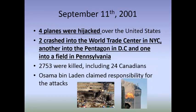The culmination of all this was the September 11th attacks. On September 11, 2001, four planes were hijacked over the United States. Two were crashed into the World Trade Center in New York City, another into the Pentagon in Washington D.C., and another crashed into a field in Pennsylvania. It's believed the fourth plane was also destined for Washington D.C., either the White House or the US Capitol building. As a result, 2,753 people were killed, including 24 Canadians.